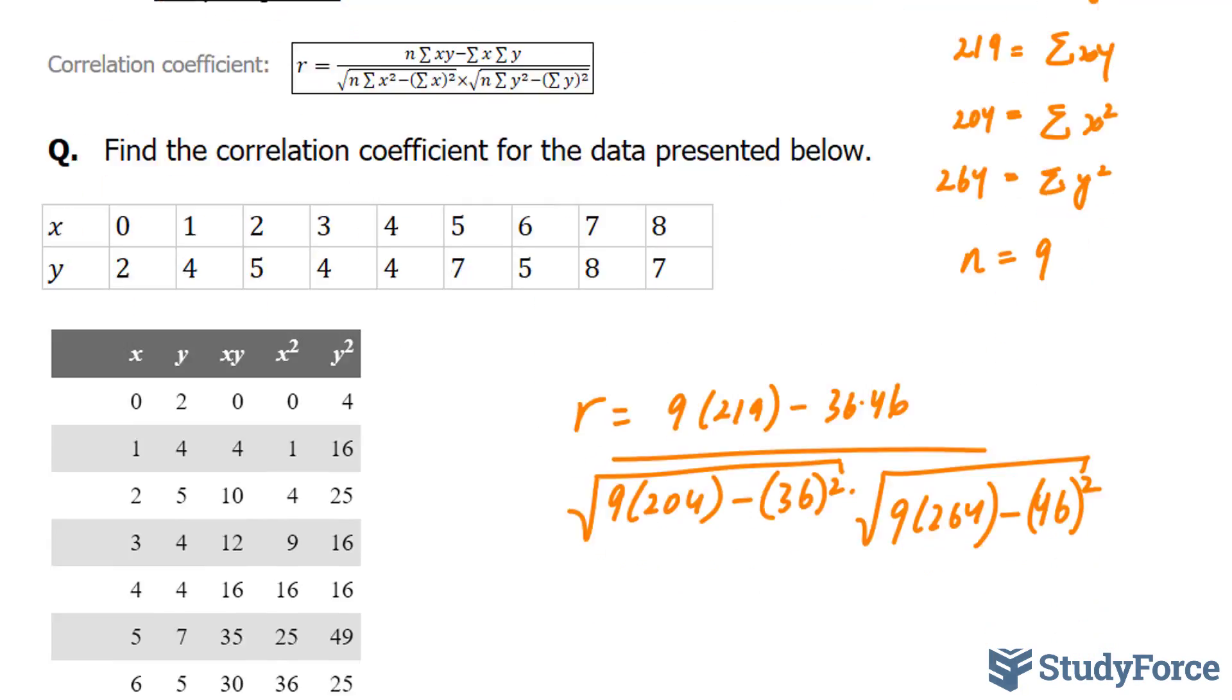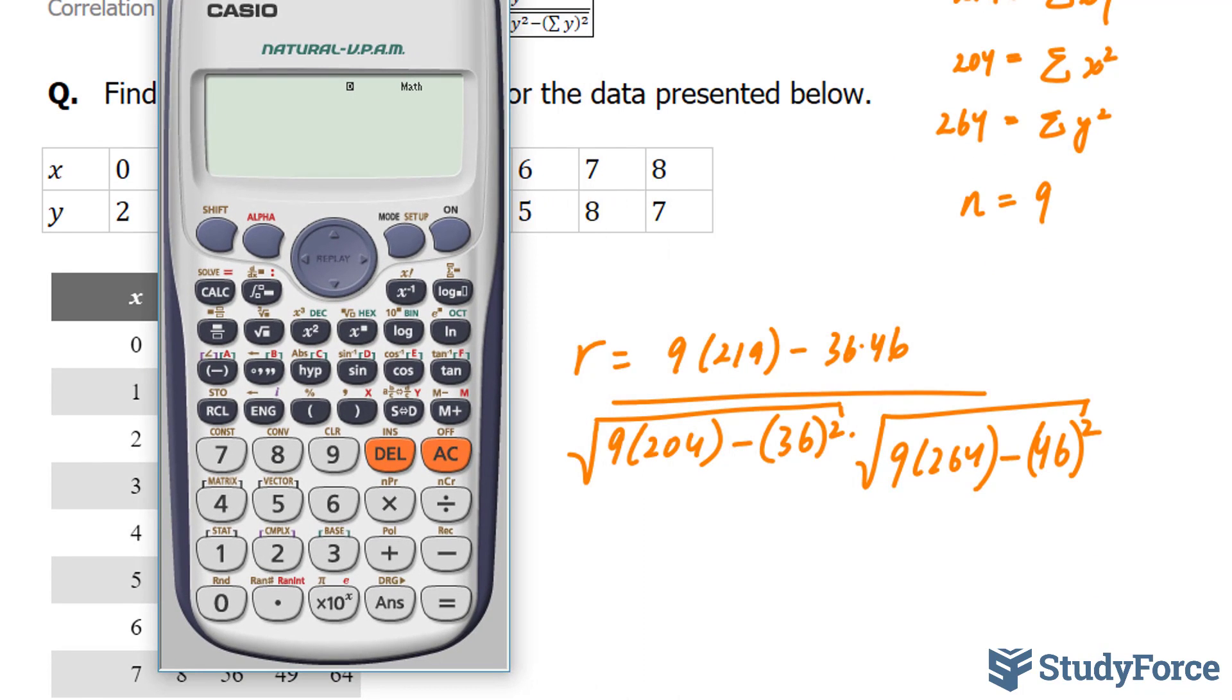Using our calculator, we'll do the numerator part first. 9 times 219, minus 36, times 46, that gives me 315.